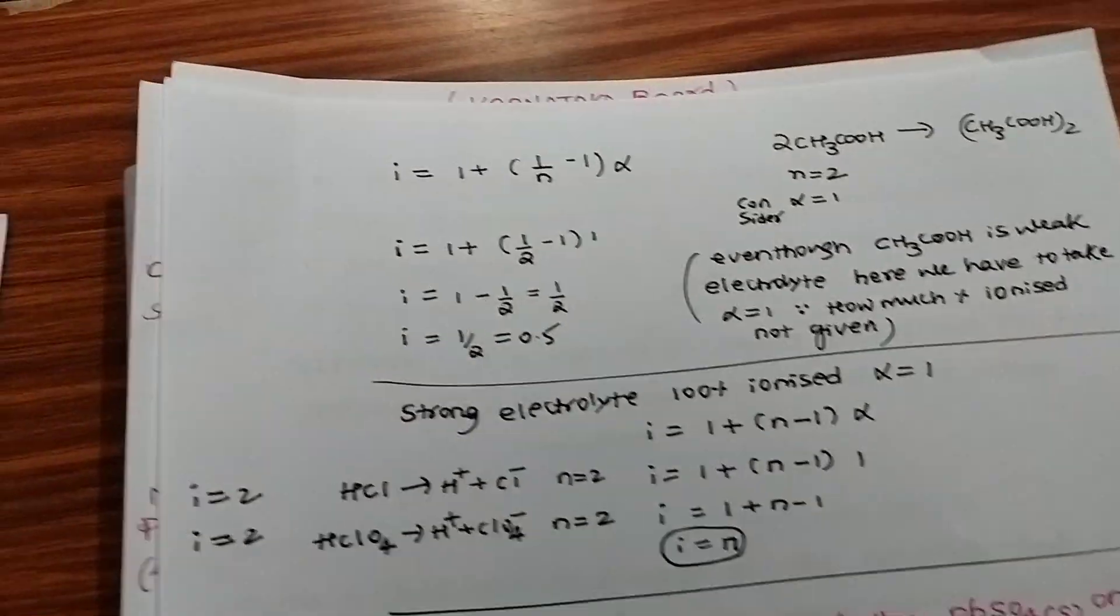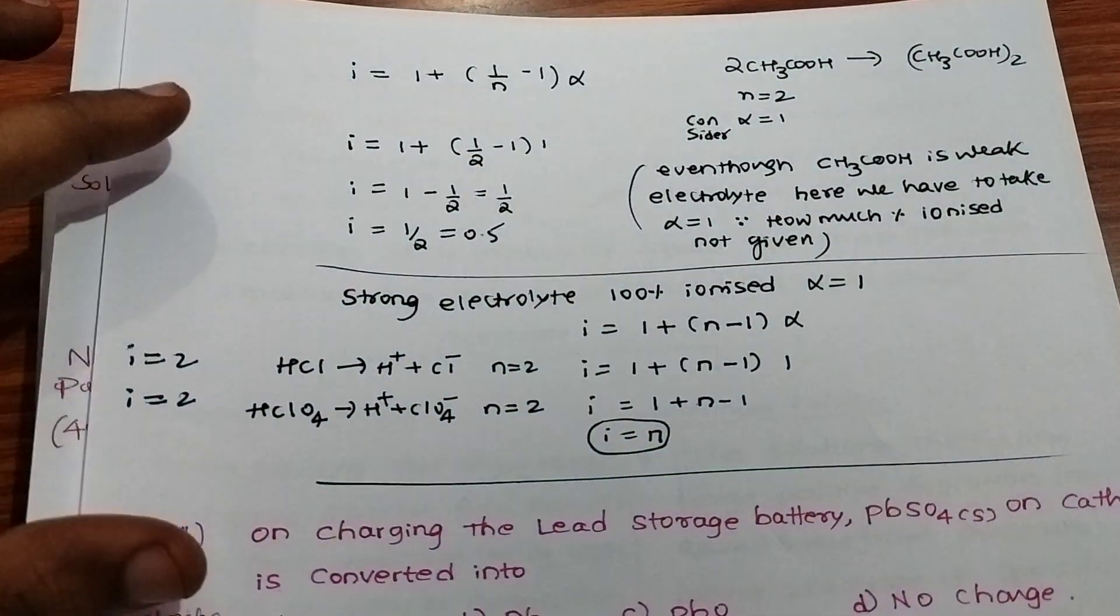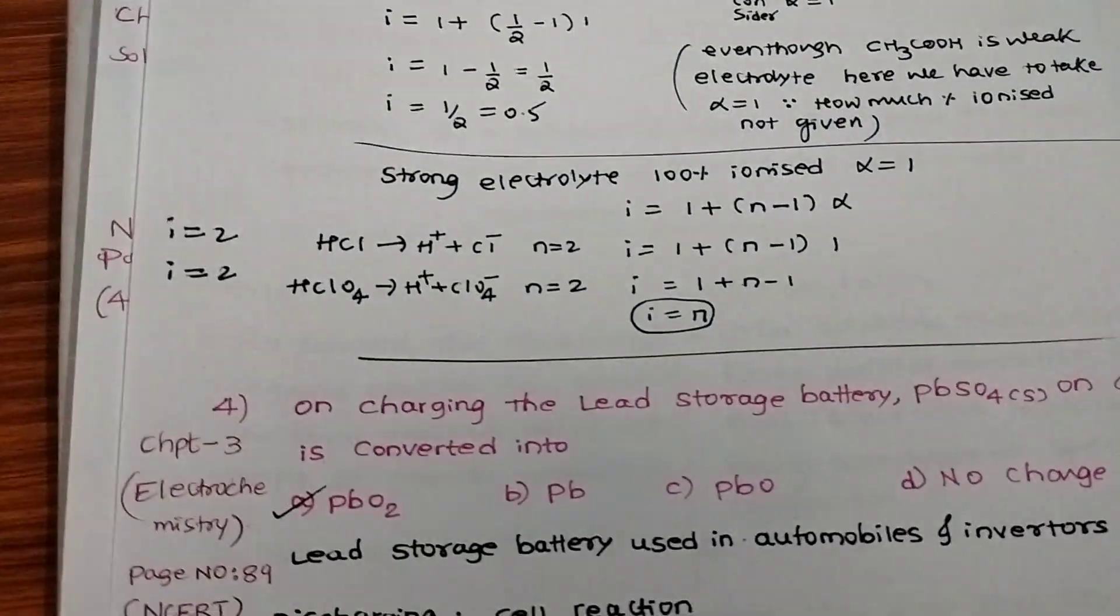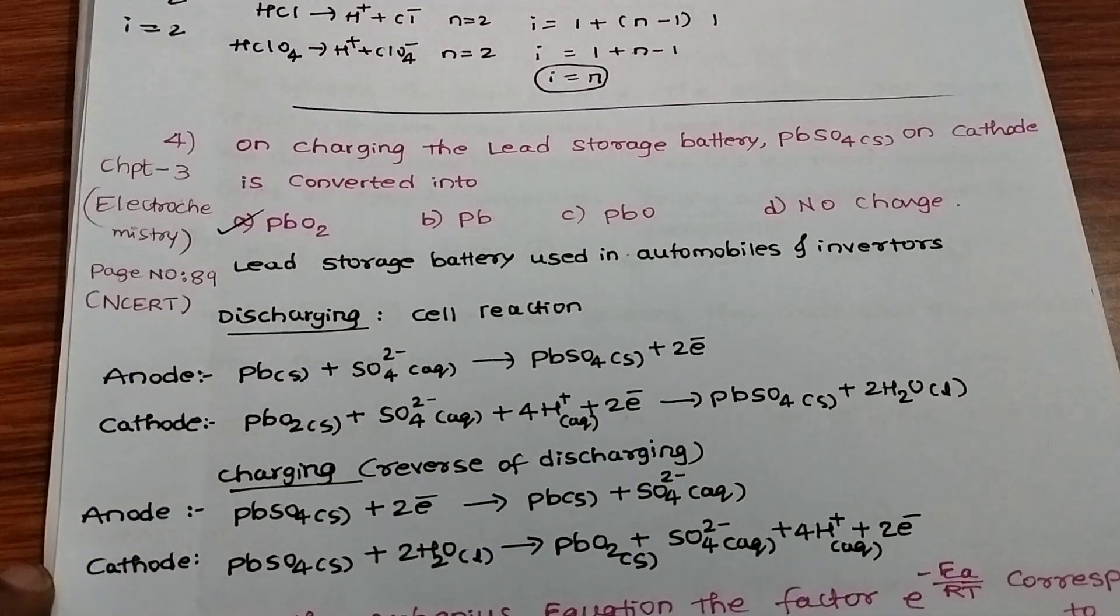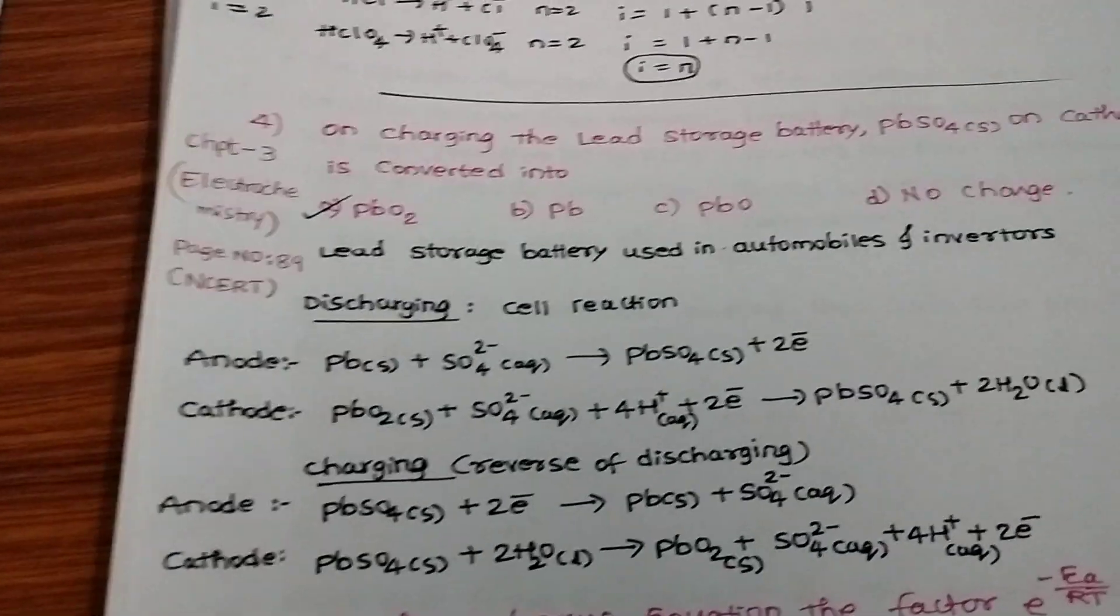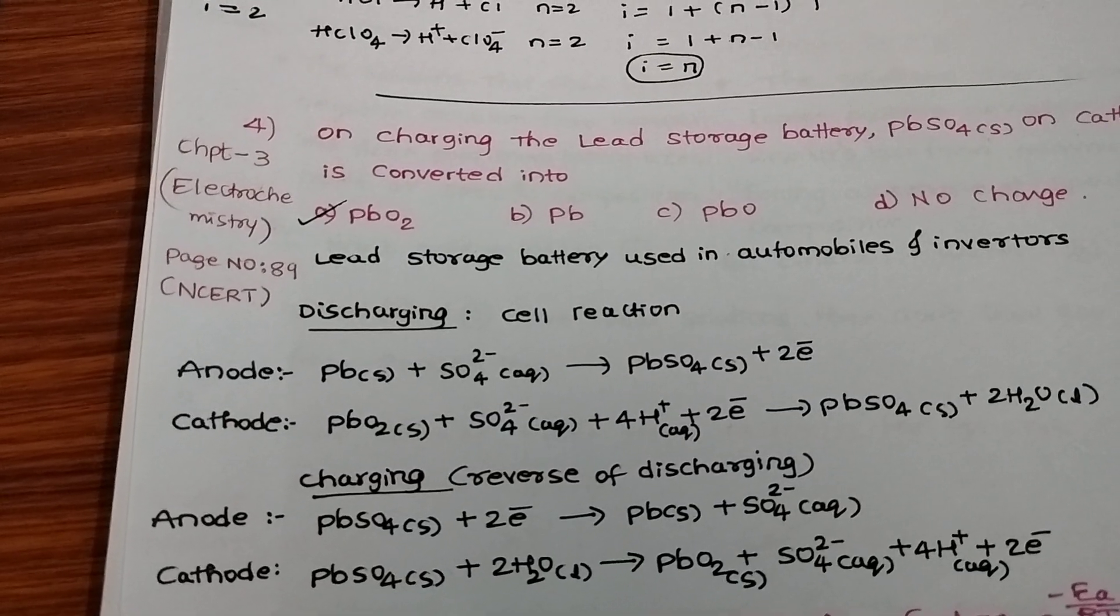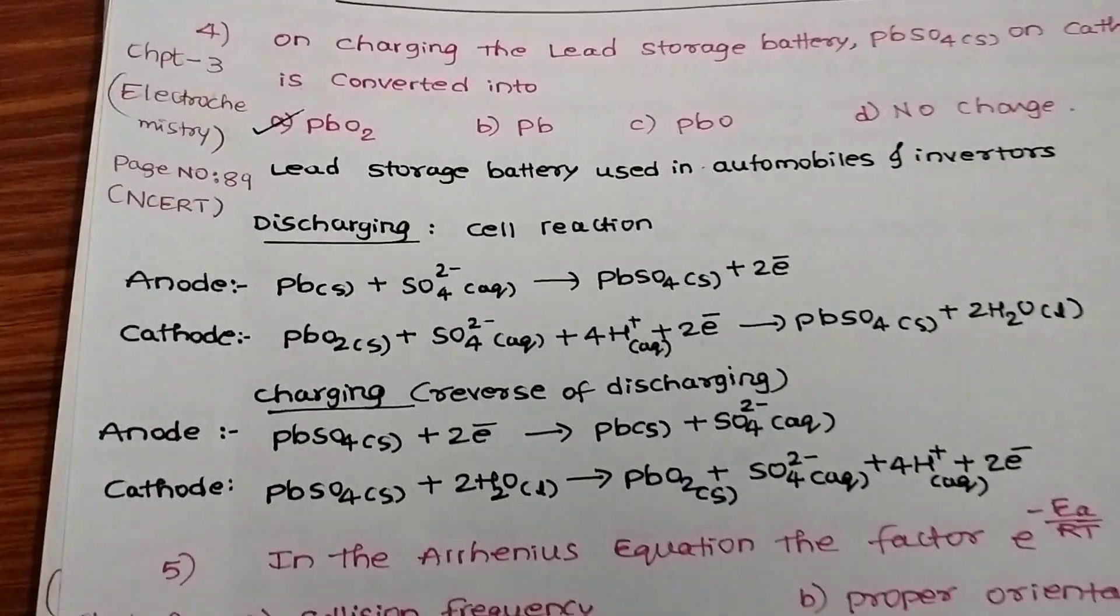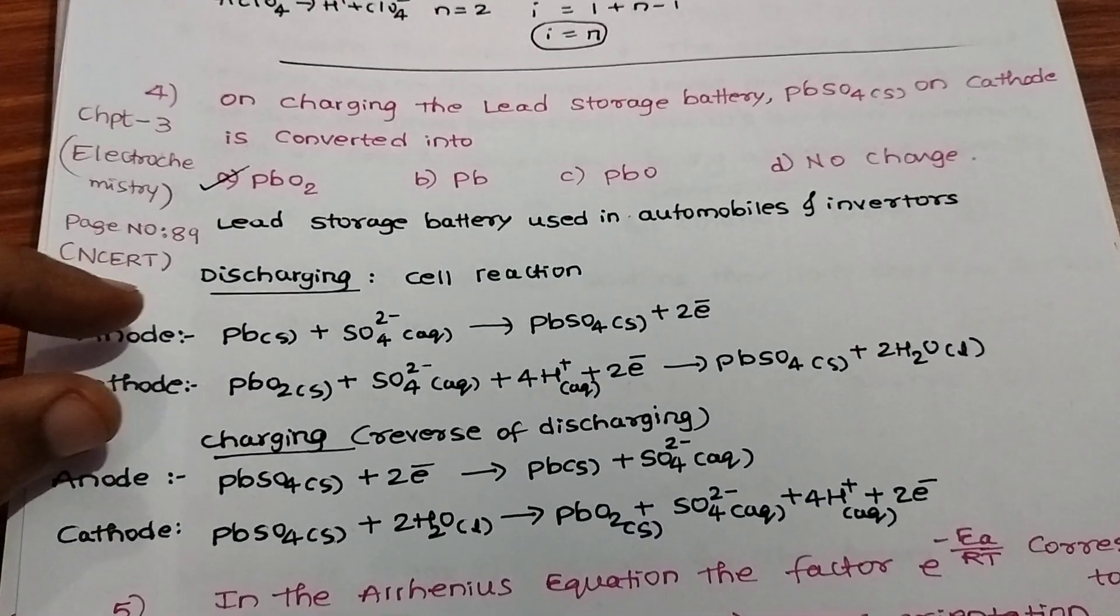Benzene solvent has low dielectric constant, so the answer is 0.5. You can see the explanation afterward. Next: when charging a lead storage battery, lead sulfate on cathode is converted into?